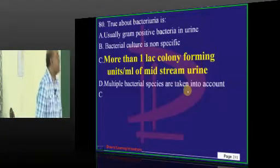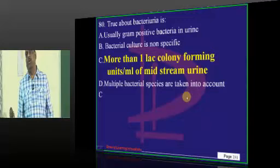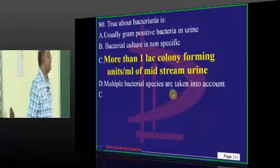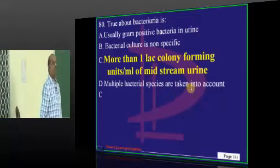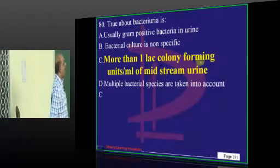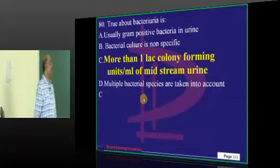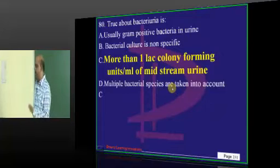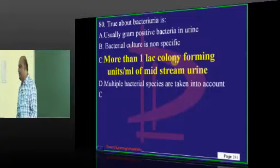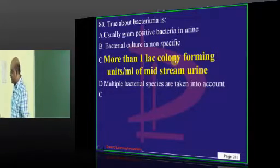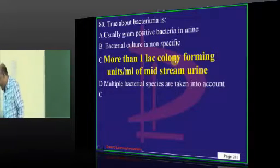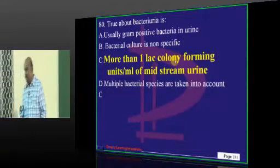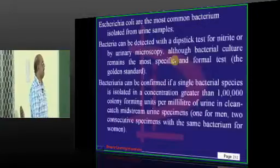Now coming to Bacteruria: more than one lakh colony forming units per ml in the midstream urine is basically called Bacteruria — that is what needs to be remembered.